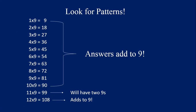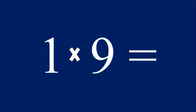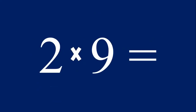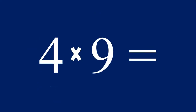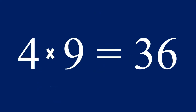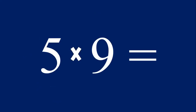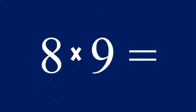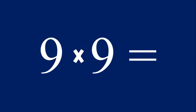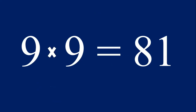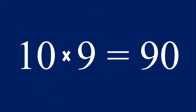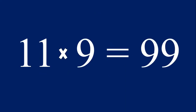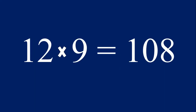Are you ready? Let's practice the equations and answers together. One times nine equals nine, two times nine equals 18, three times nine equals 27, four times nine equals 36, five times nine equals 45, six times nine equals 54, seven times nine equals 63, eight times nine equals 72, nine times nine equals 81, ten times nine equals 90, eleven times nine equals ninety-nine, and twelve times nine equals 108.